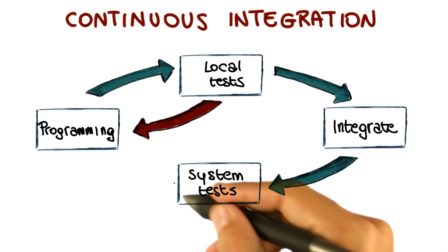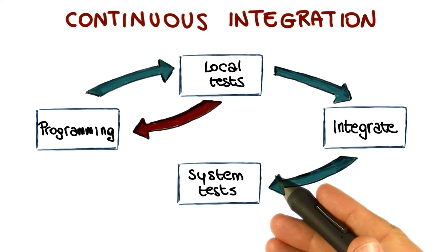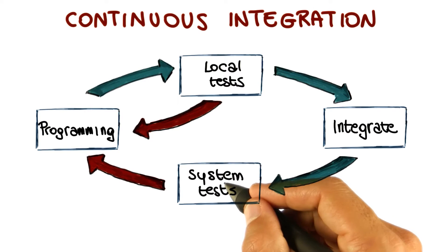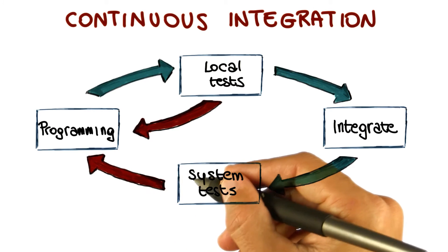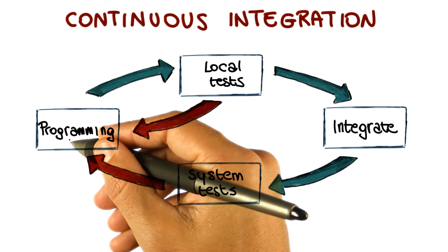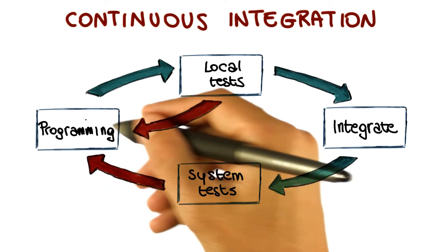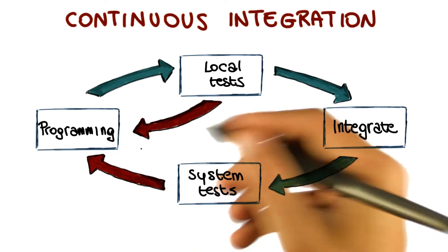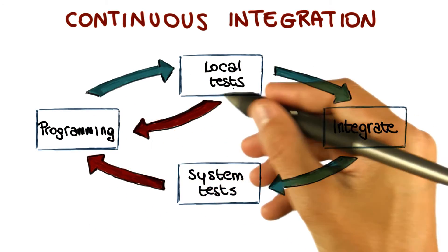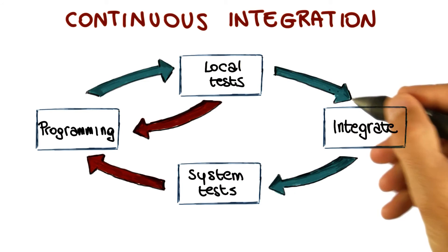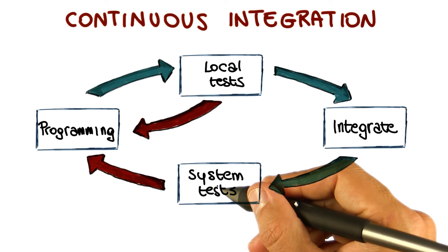When they run these tests, there are two possibilities. The test might fail, and if a test fails, you broke it — and therefore you'll have to fix it. So developers will have to go back and modify the system, again going through the cycle of running the local tests, integrating, and running the system tests.